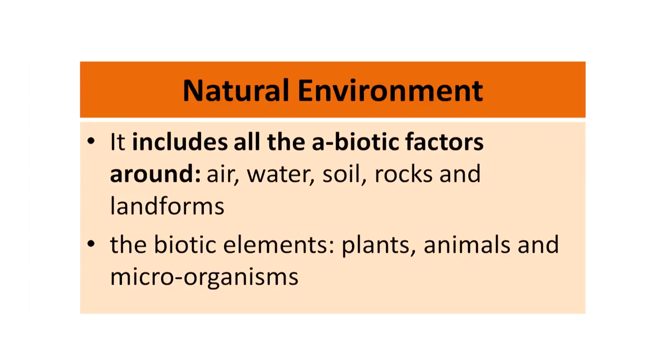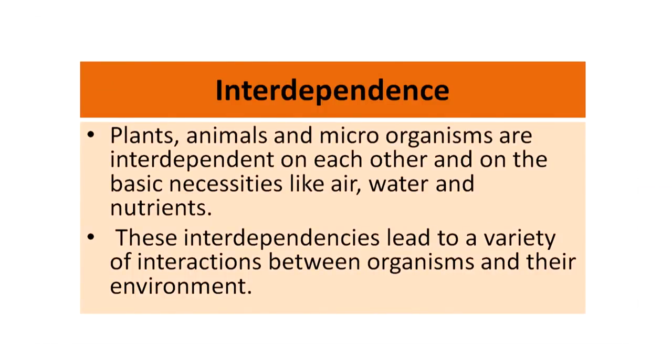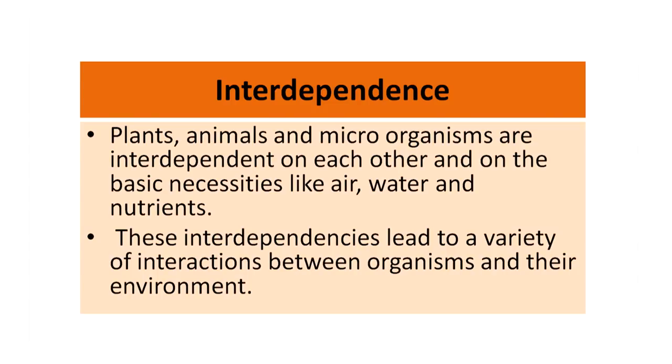Natural environment includes abiotic factors — non-living factors like air, water, soil, rocks and landforms. It also has biotic elements which are plants, animals and microorganisms. Microorganisms are small invisible bacteria, viruses etc. Plants, animals and microorganisms are all interdependent on each other and have basic necessities like air, water and nutrients. These interdependencies lead to a variety of interactions. For example, in a simple food chain, a snake eats a rat, and a rat eats grain — so all organisms are interdependent and need air, water and nutrients to survive.